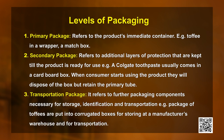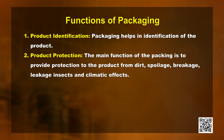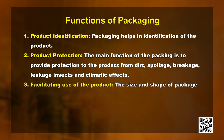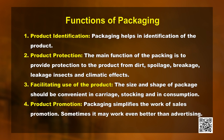Third, transport package: packaging components necessary for storage, identification, and transportation. For example, packages of toffees are put into corrugated boxes for storing at a manufacturer's warehouse and for transportation. Functions of packaging: the first is product identification — packaging helps identify the product. Then product protection — it protects the product from dirt, spoilage, breakage, leakage, insects, and climatic effects. Packaging also facilitates use of the product; the size and shape should be convenient for carriage, stocking, and consumption. It also helps in product promotion, sometimes working better than advertising.